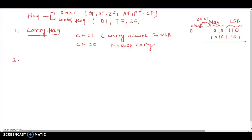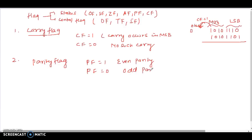The second flag is the parity flag. PF is equal to 1 if even parity — meaning the number of 1s in the result is even. PF is equal to 0 if odd parity. So whenever there is an odd number of 1s, the parity flag is 0. Whenever there is an even number of 1s, the parity flag is 1.